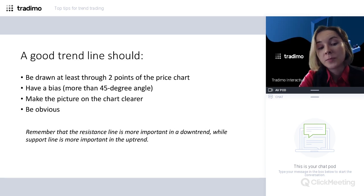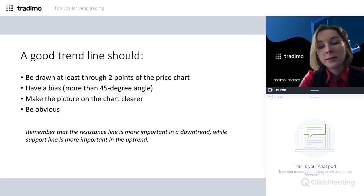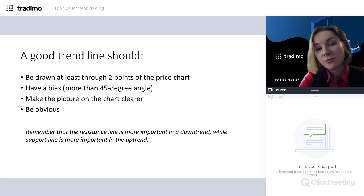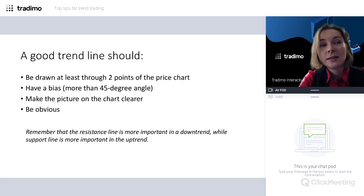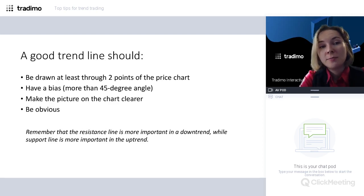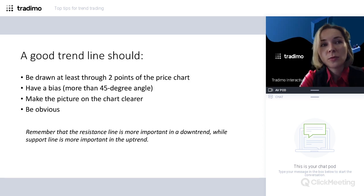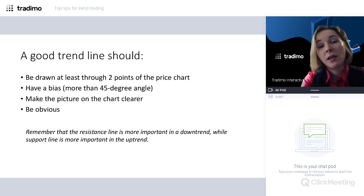Sometimes people see an uptrend with higher highs and higher lows and think there's no need to draw a trend line. But that is not the right approach — the exact positions and markings on the chart should be made, as not everything can be seen by eye. A trend line on the chart acts not only as support and resistance but creates a clear picture of what is happening in the market. It's not wise to add too many trend lines to the chart.